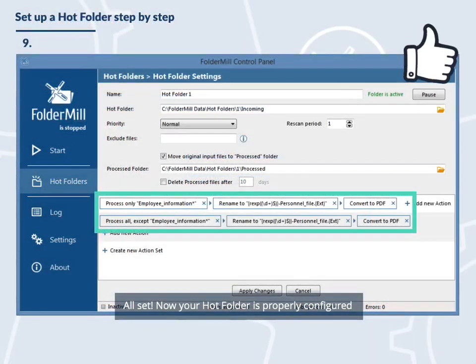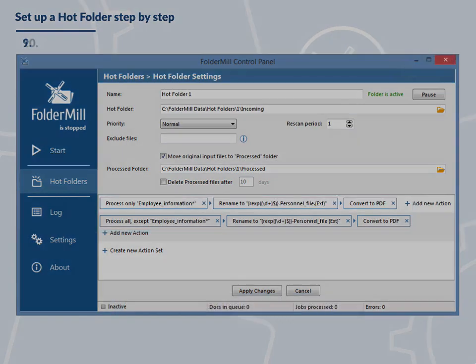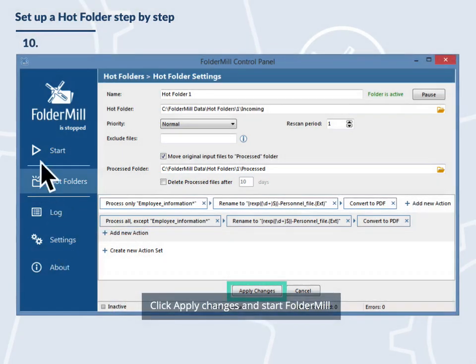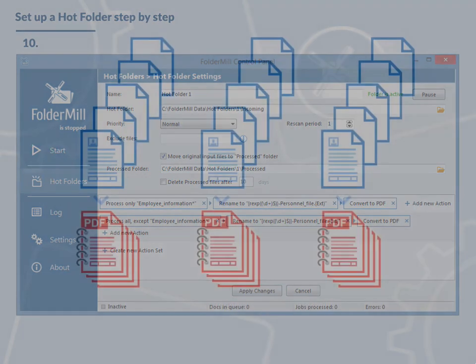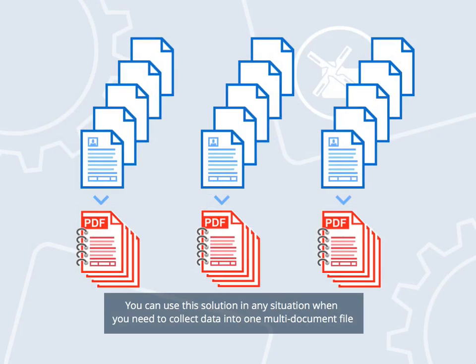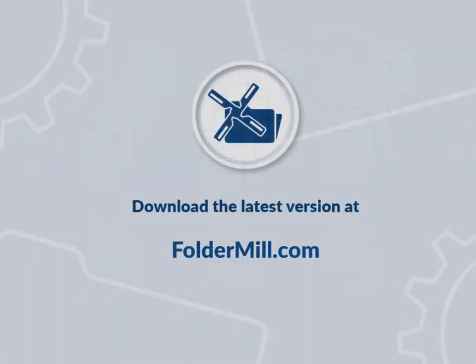All set. Now your hot folder is properly configured. Click apply changes and start FolderMill. You can use this solution in any situation when you need to collect data into one multi-document file. You can download FolderMill at foldermill.com.